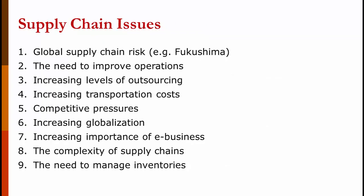There are some issues that supply chains face, which I'll briefly mention and discuss in more detail later. Number one is global supply chain risk — for example, the meltdown of the Fukushima reactor in Japan. Number two, the need to improve operations, meaning get more for less out of your supply chain. Number three, the increasing level of outsourcing — for example, Apple making most of its products in China. Number four, increasing transportation costs; we're seeing a temporary respite from lower oil prices, but they will continue to rise.